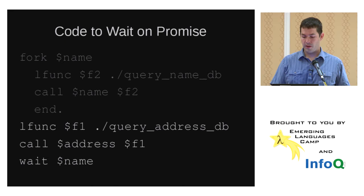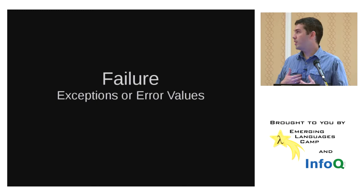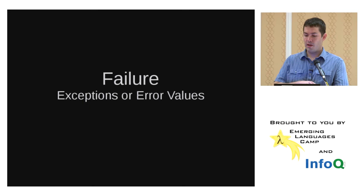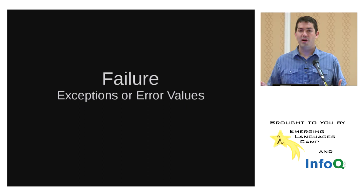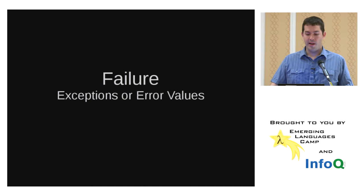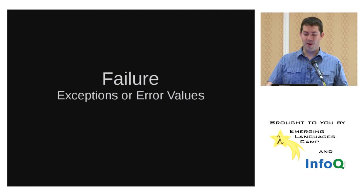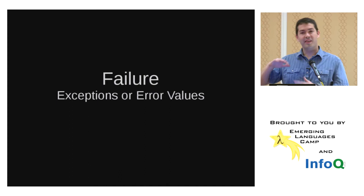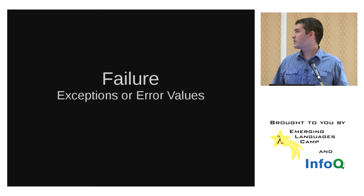Those are the two models for Qbert concurrency. Now here is the failure handling that I was talking about earlier — this to me is the most interesting part. There's been a long debate about exceptions versus error values. Exceptions were winning for a while, and now Go and Erlang are coming in and saying 'no, error values,' so that's making a comeback.